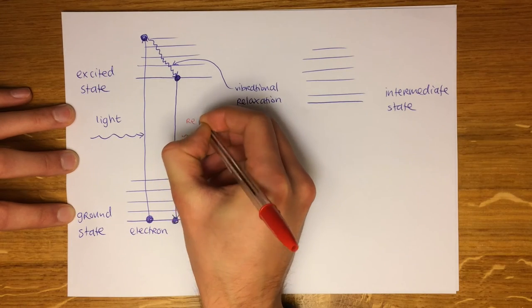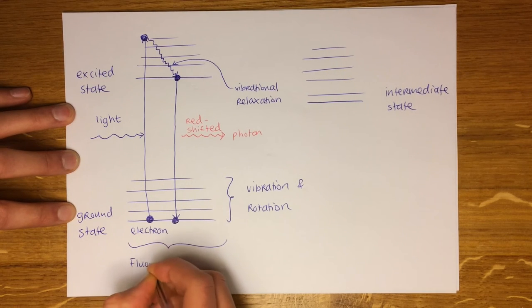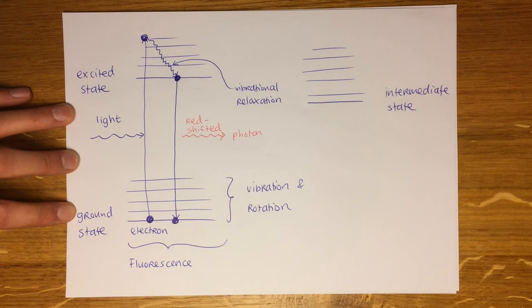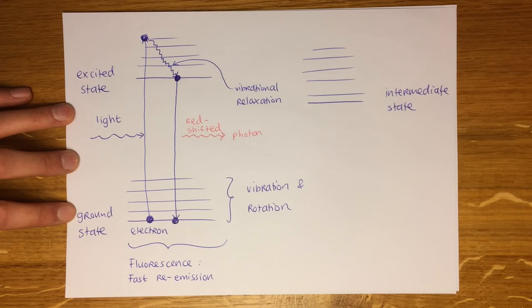This jump down is smaller than the jump up to the excited state level so the color of the re-emitted light is shifted towards the red end of the visible spectrum. This first route is called fluorescence which you might recognize from the bright yellow safety vests. This process is very fast and it will stop almost immediately after the incident light is turned off.